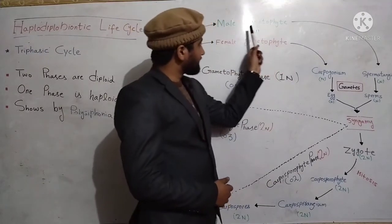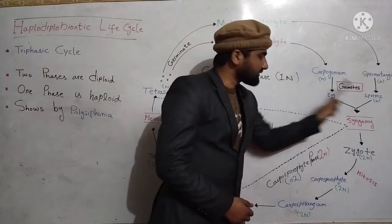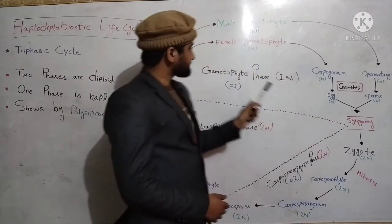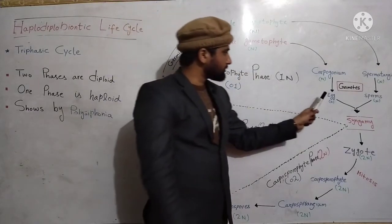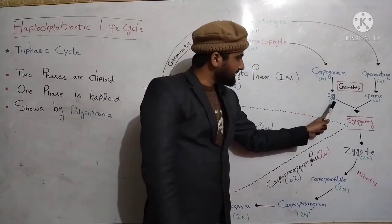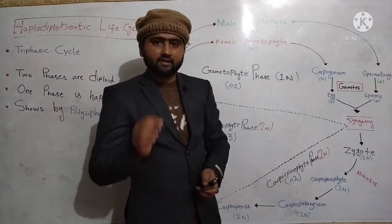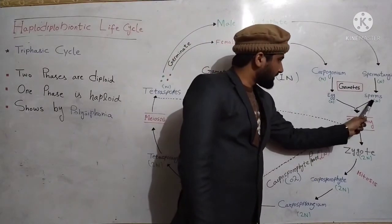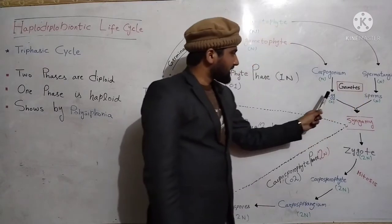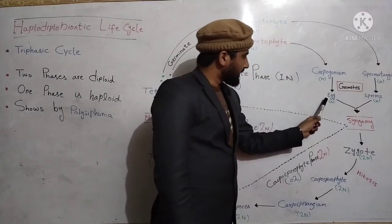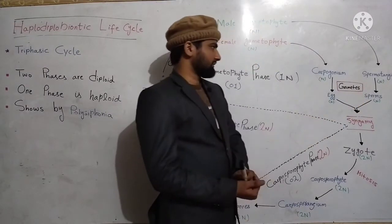The function of male gametophyte is to produce male gametes, which are sperms. The function of female gametophyte is to produce female gametes, that is the egg. Remember that sperms are produced in spermatangium and the egg is produced by carpogonium.